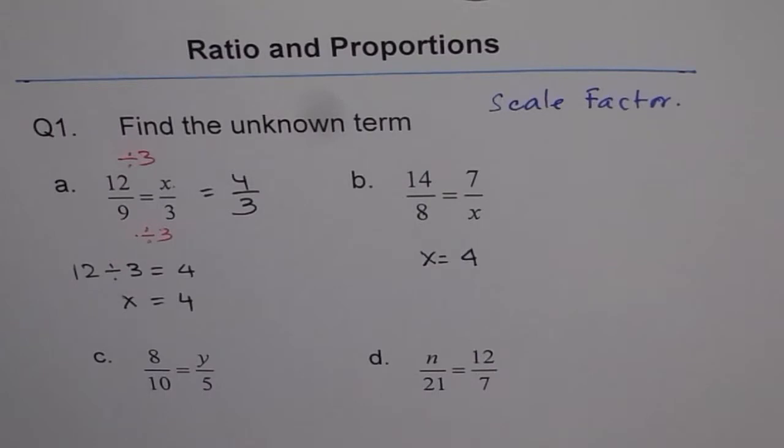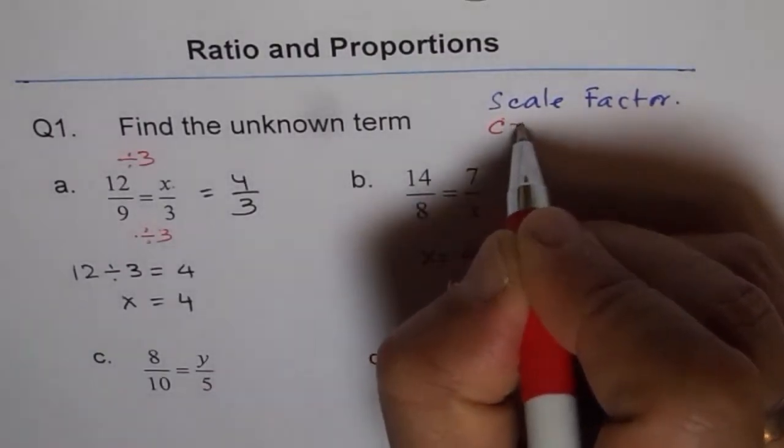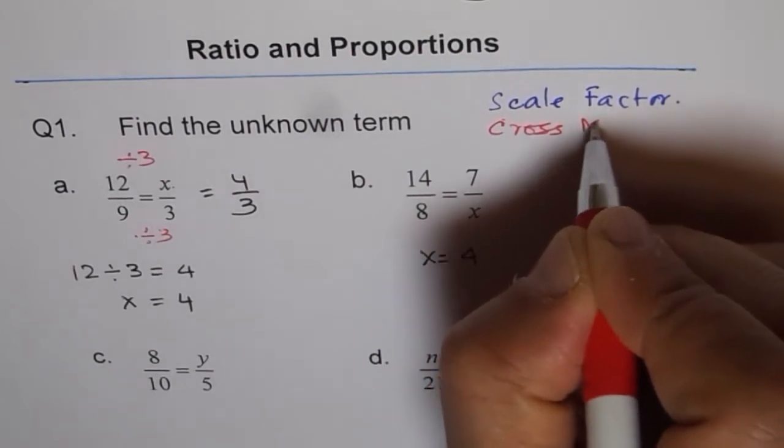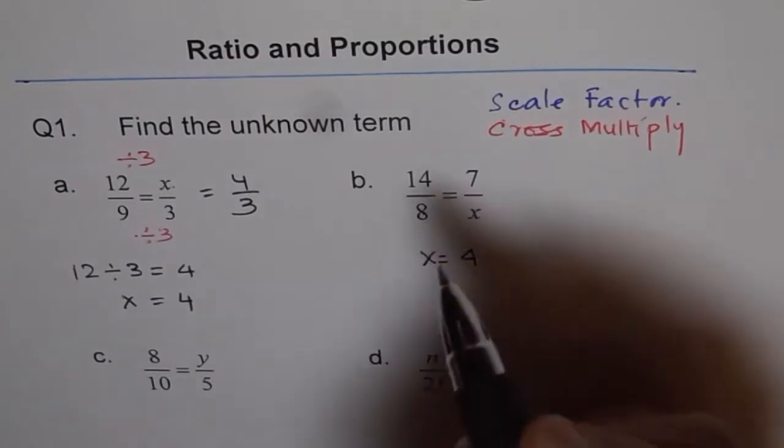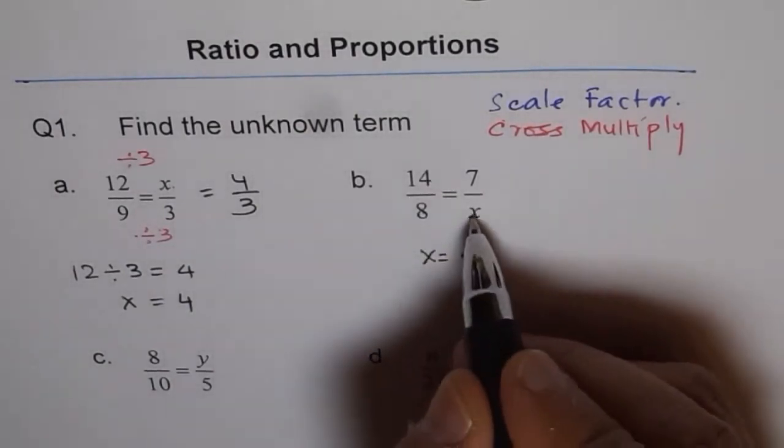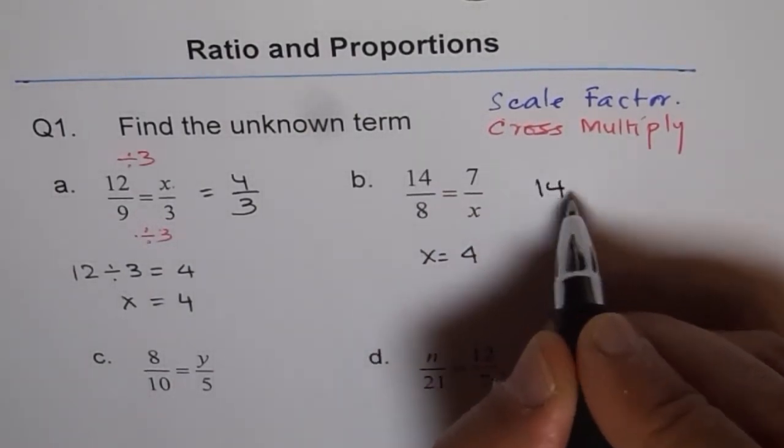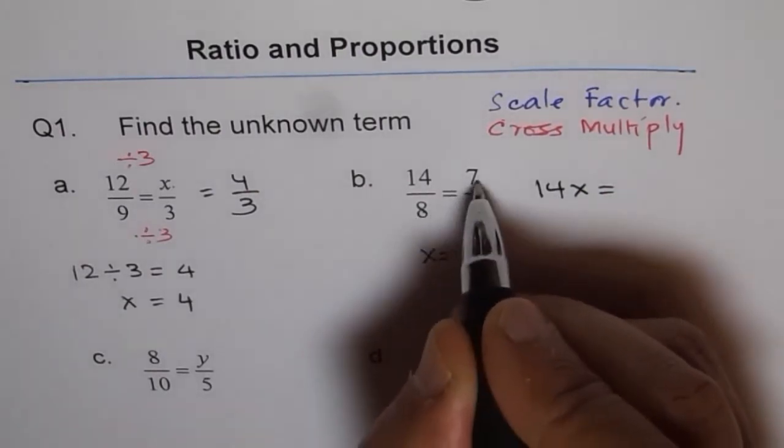The other method is cross multiply. I'll show you how to use cross multiply. When we cross multiply, we get 14x = 7 × 8, which is 56.